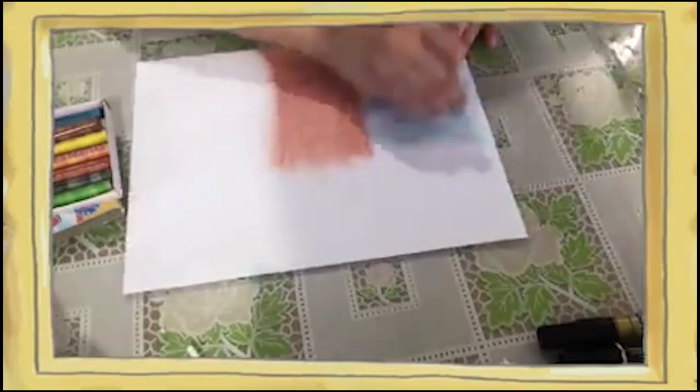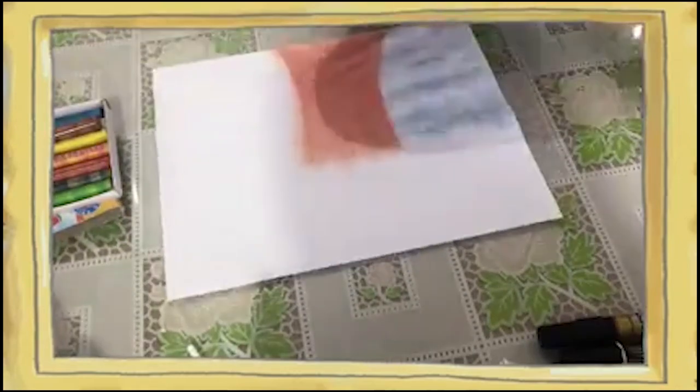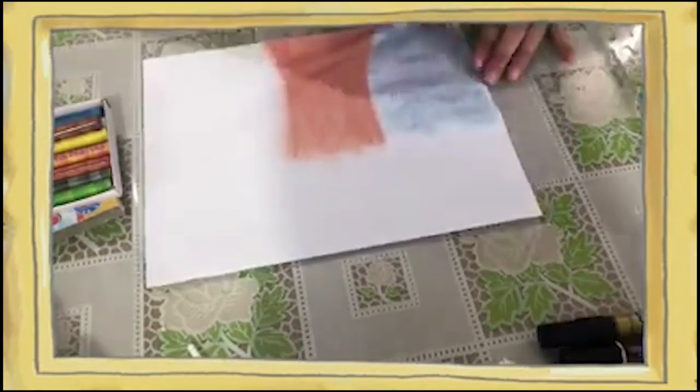Next, we will paint the sky using watercolor and cotton. You have to dab the cotton repeatedly until you get the color that you want.